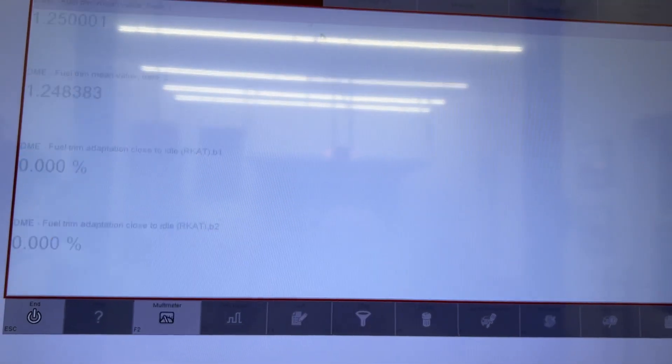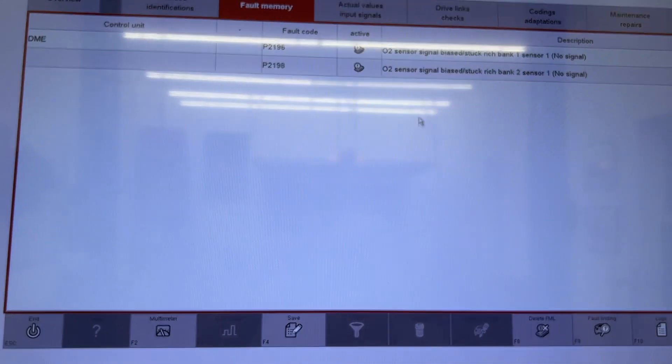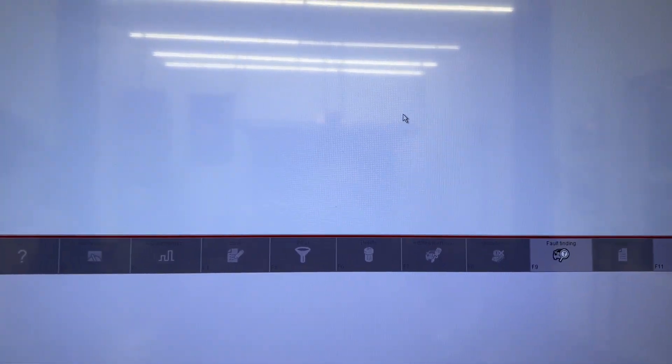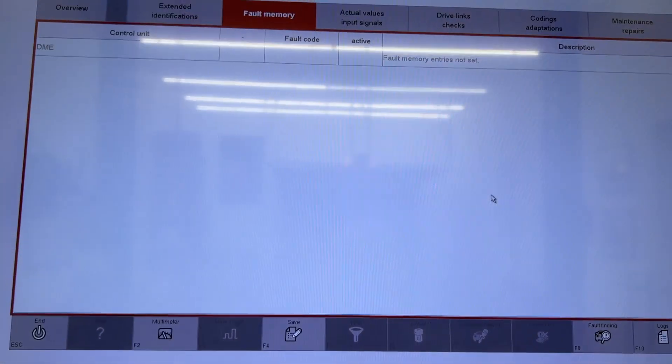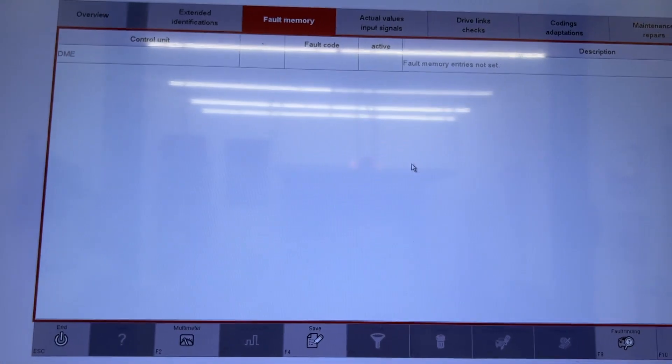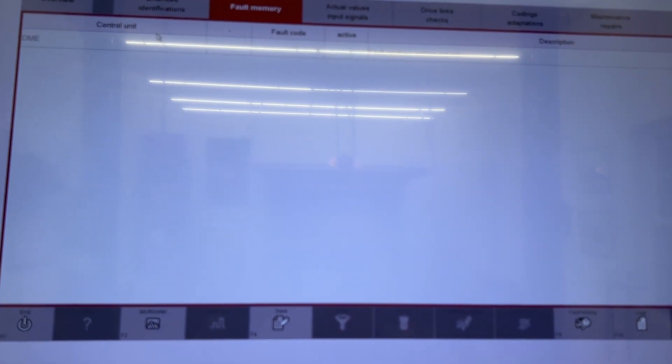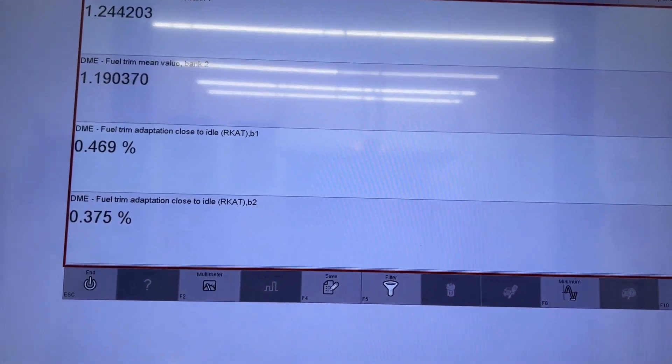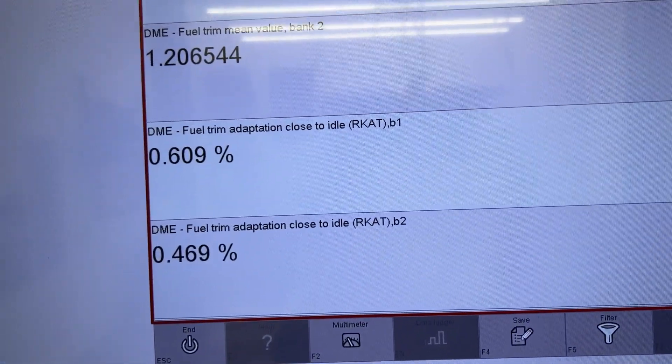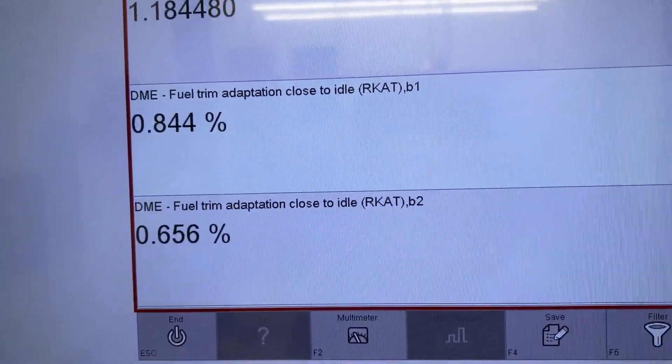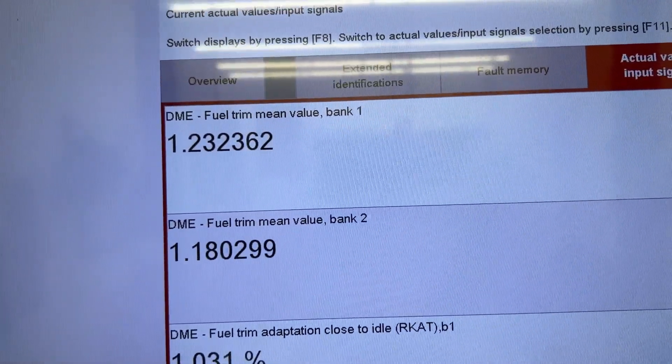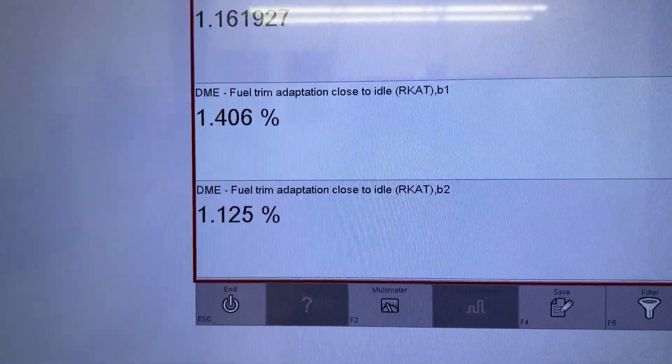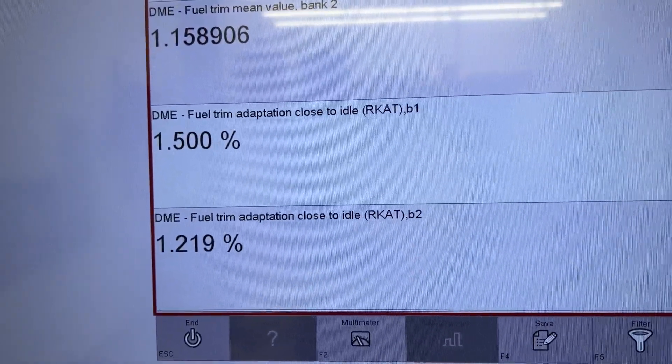So let me go back to my fault memory. I'm going to reset these codes. I'm going to delete them. Yes. And I don't know if you heard that, but the idle of my car just changed as soon as I did that. Go back to my actual values. And you can see that my RCATs are now being adjusted. And my fuel trim means should start dropping back closer to 1 as my RCATs adjust the adaptation.